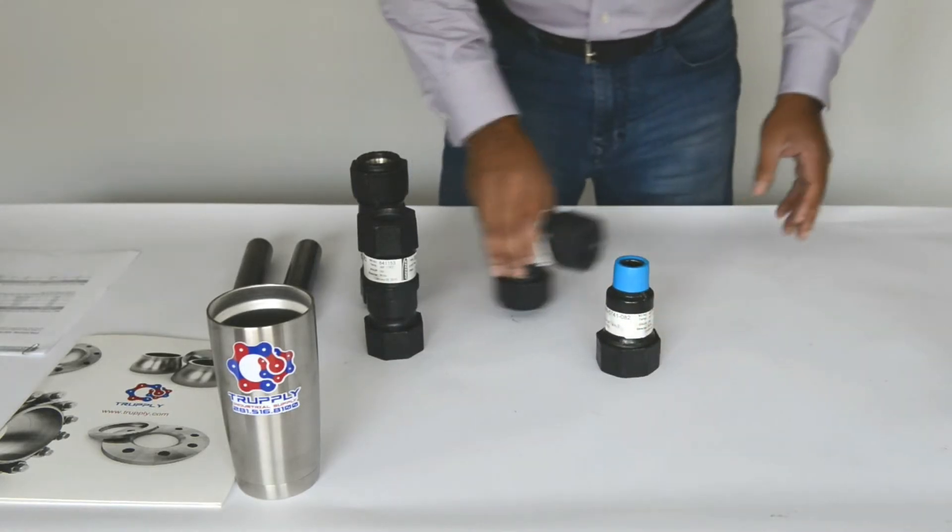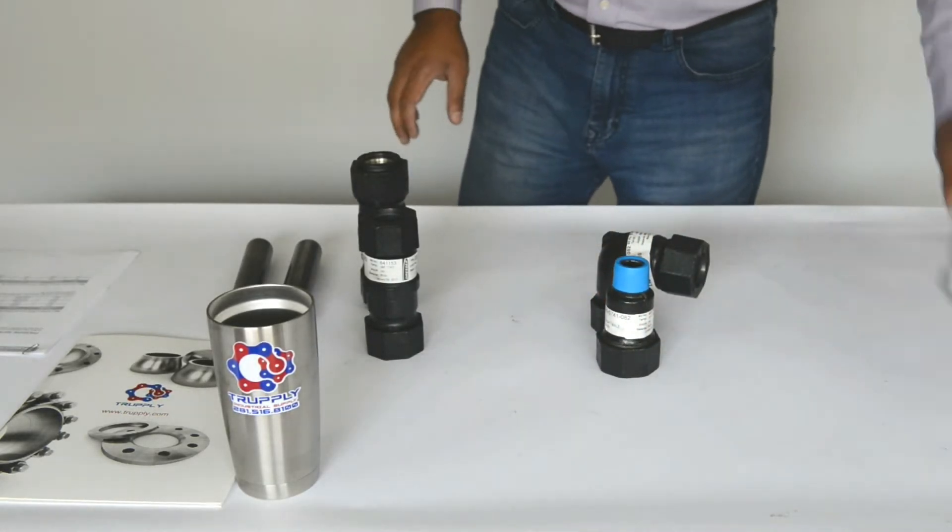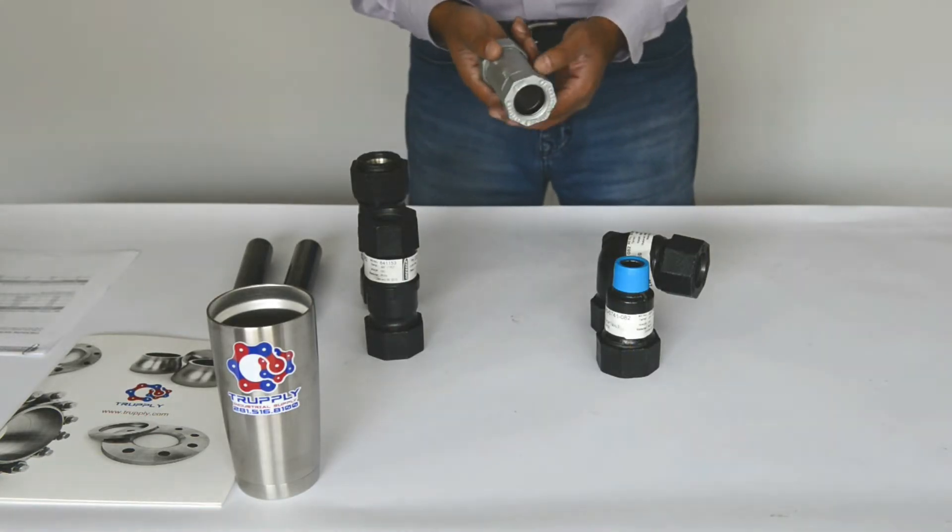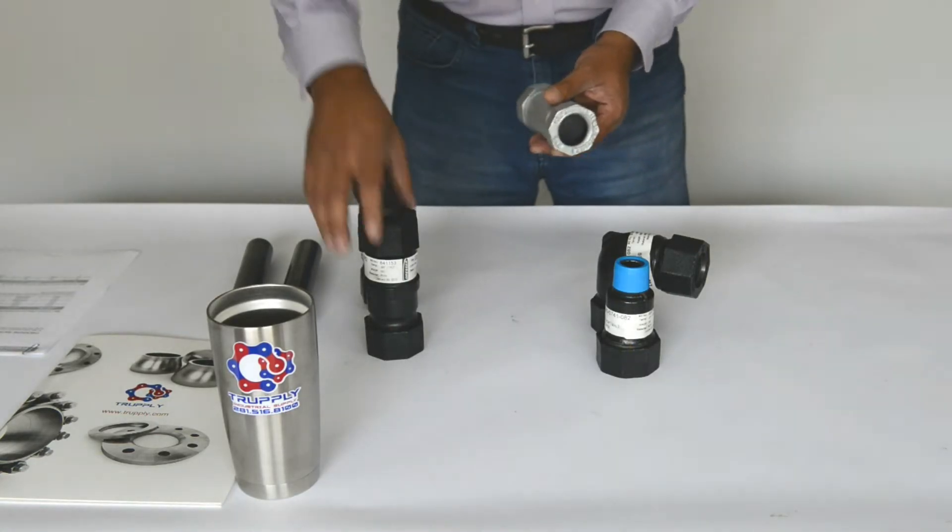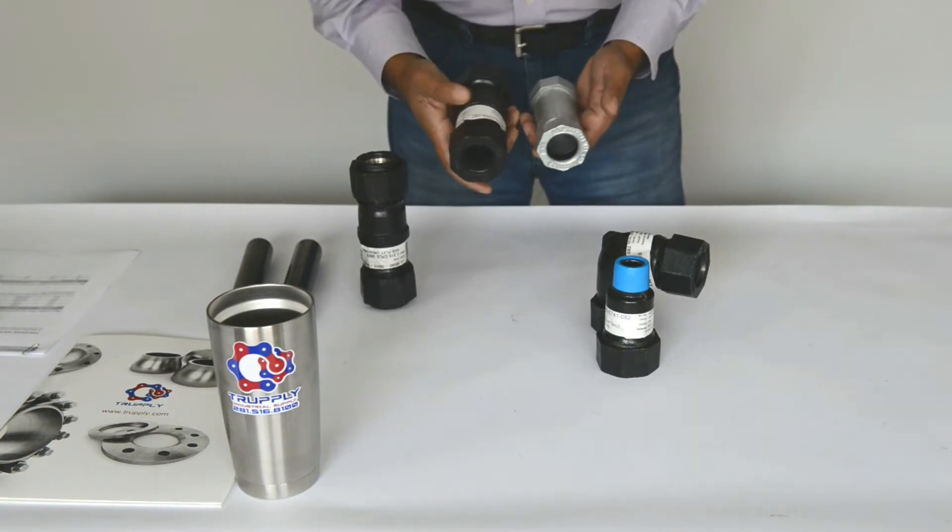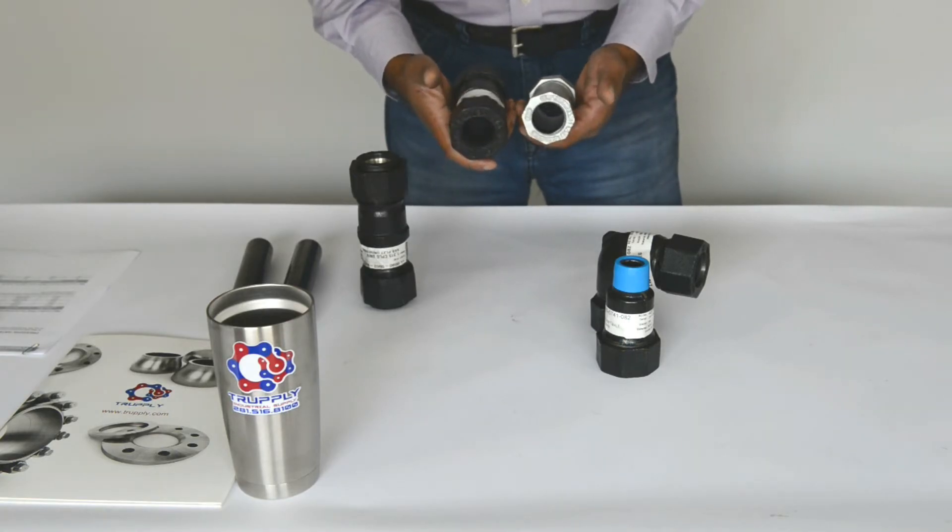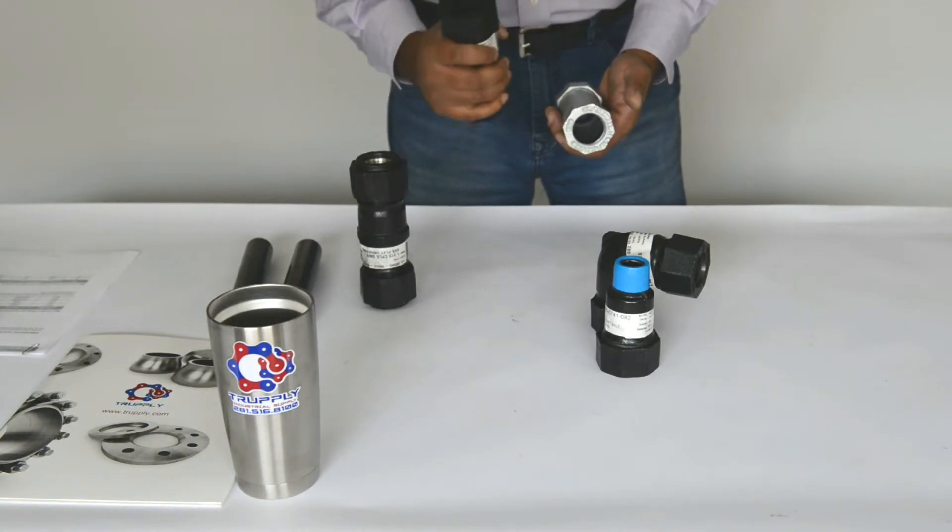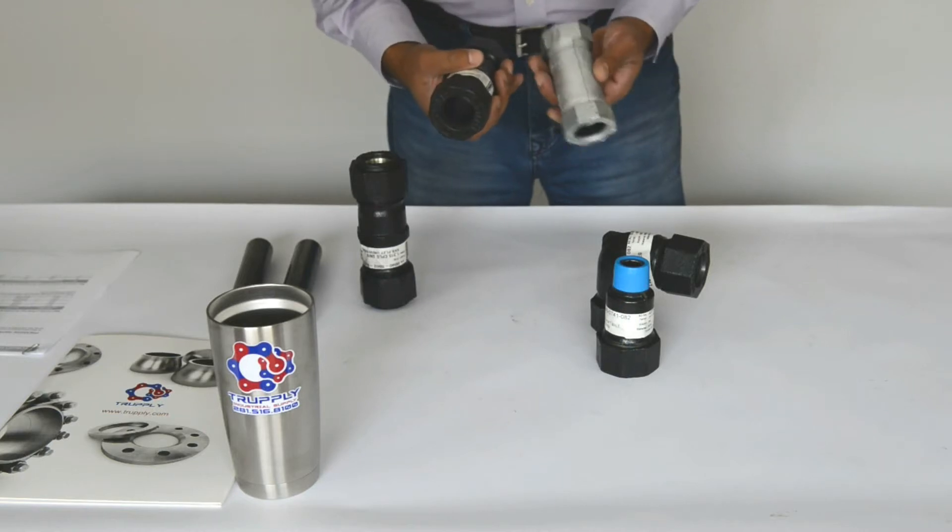I just want to give you a quick comparison. This is a Style 65 coupling that you can see in our other videos. If you compare it with Style 90, they are both for one inch pipe and you can see that a Style 90 is much heavier than a Style 65.